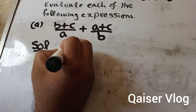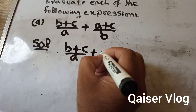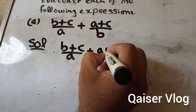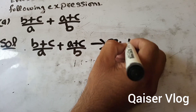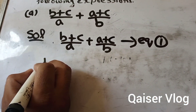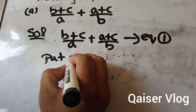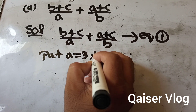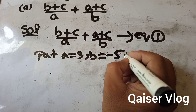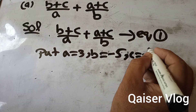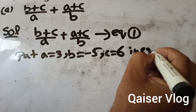First we write the same question again: (b + c) / a + (a + c) / b, and we call it equation 1. In the next step we put the values: a = 3, b = -5, and c = 6 in equation 1.